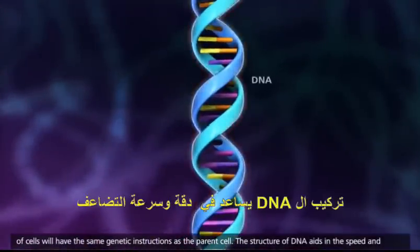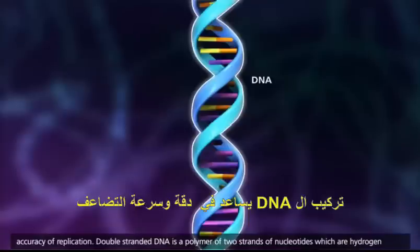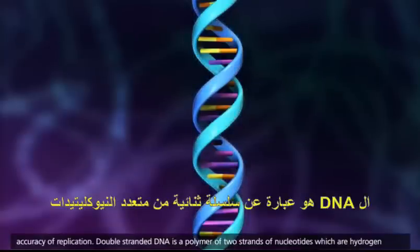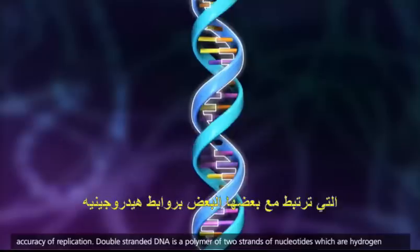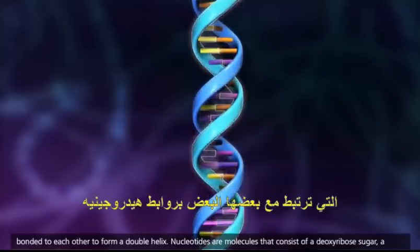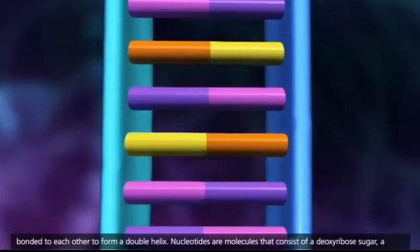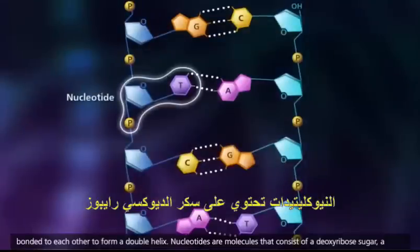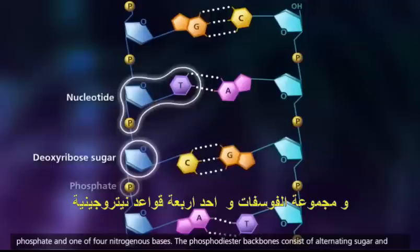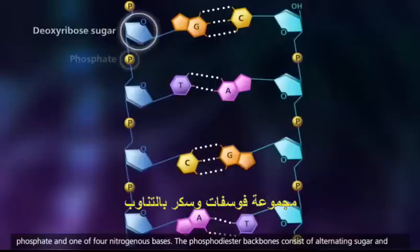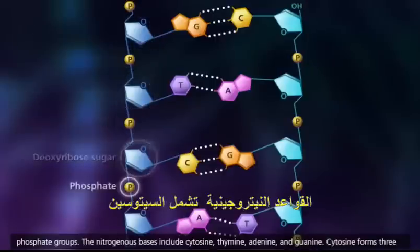The structure of DNA aids in the speed and accuracy of replication. Double-stranded DNA is a polymer of two strands of nucleotides, which are hydrogen bonded to each other to form a double helix. Nucleotides are molecules that consist of a deoxyribose sugar, a phosphate, and one of four nitrogenous bases. The phosphodiester backbones consist of alternating sugar and phosphate groups.